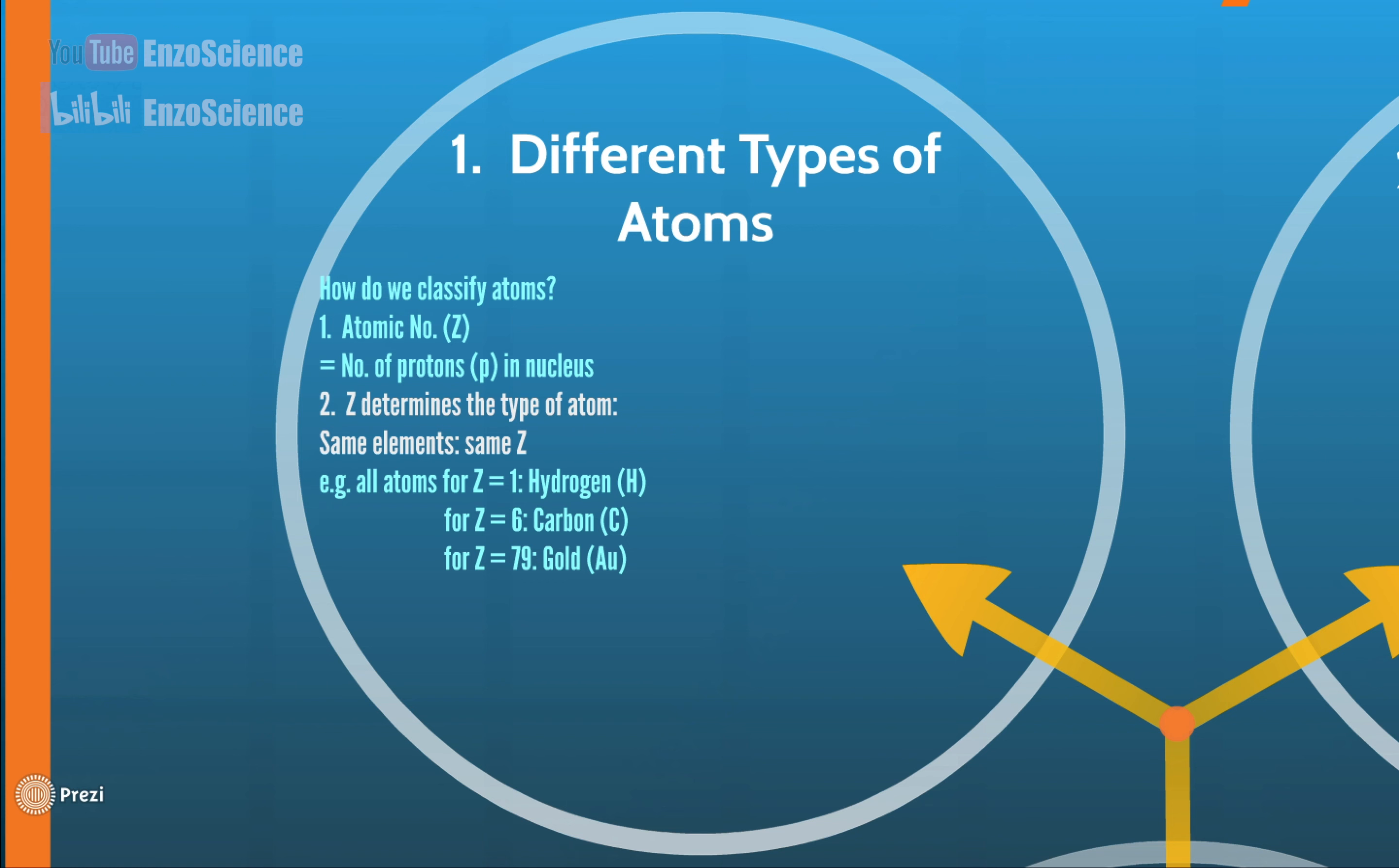For example, when capital Z equals 1, it means the atom is hydrogen; 6 means carbon, and 79 means gold. Here we need to remember capital Z means atomic number. And you can link this to Planck's constant h and atomic number Z, just in case you forget it.